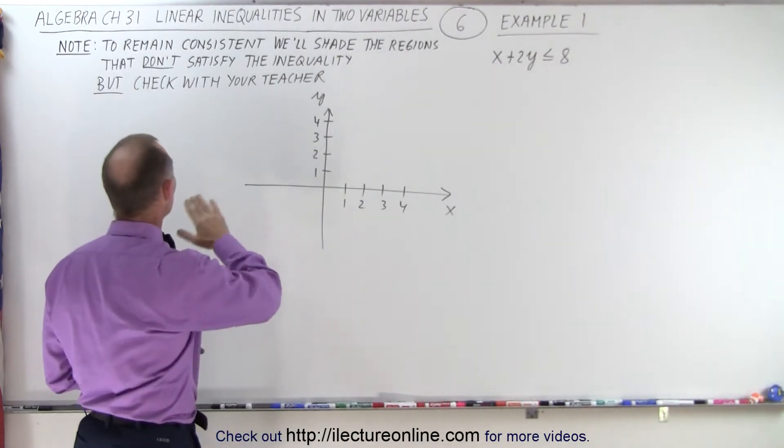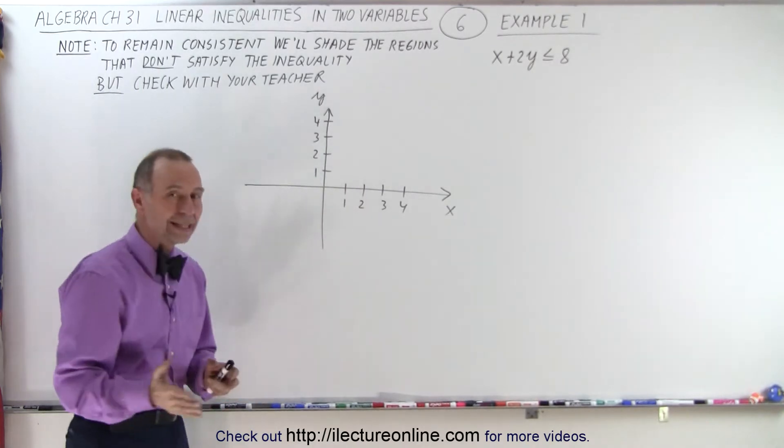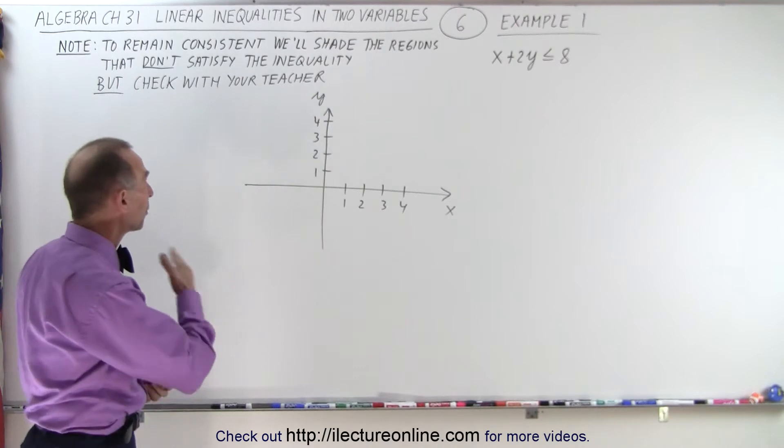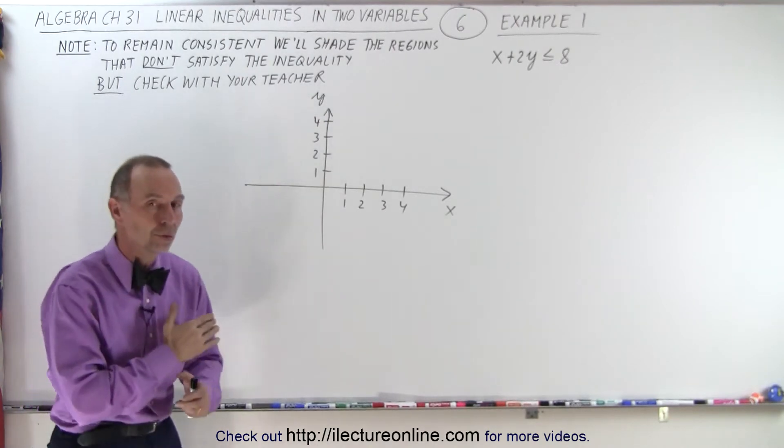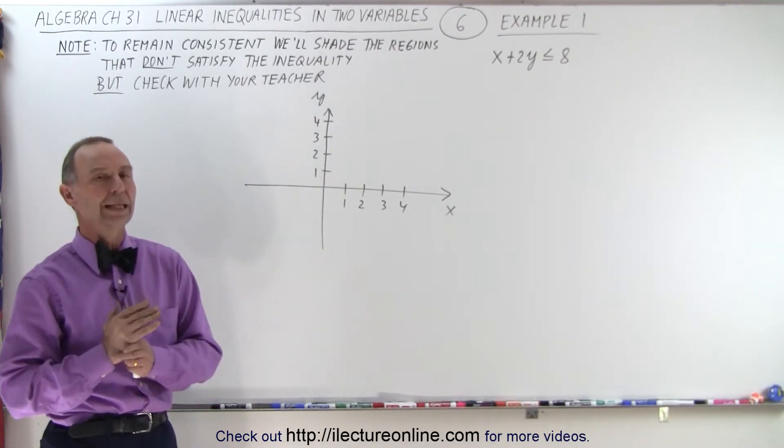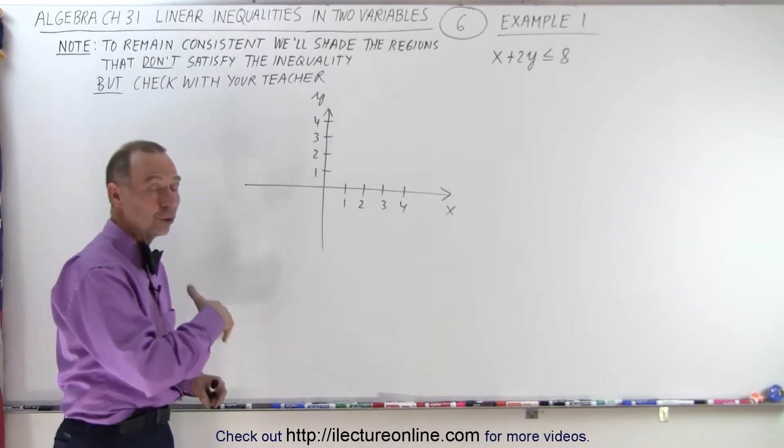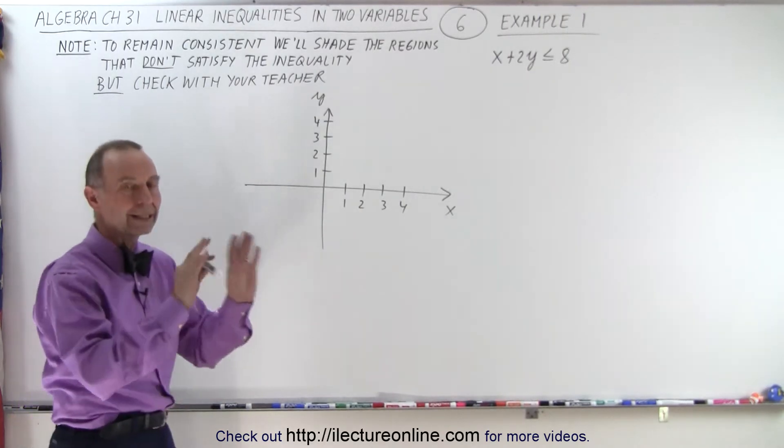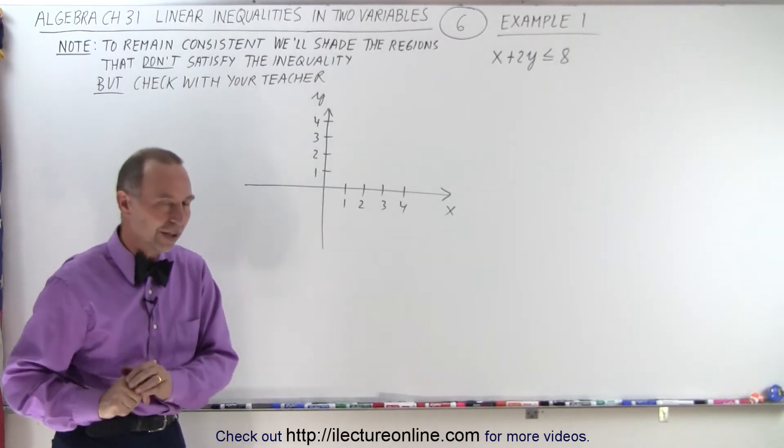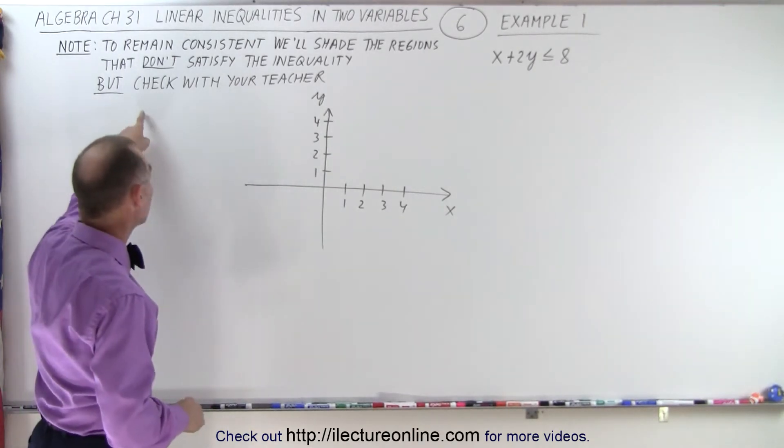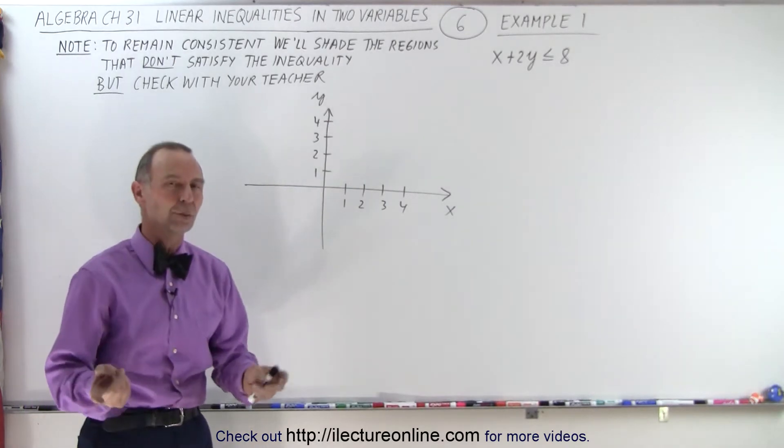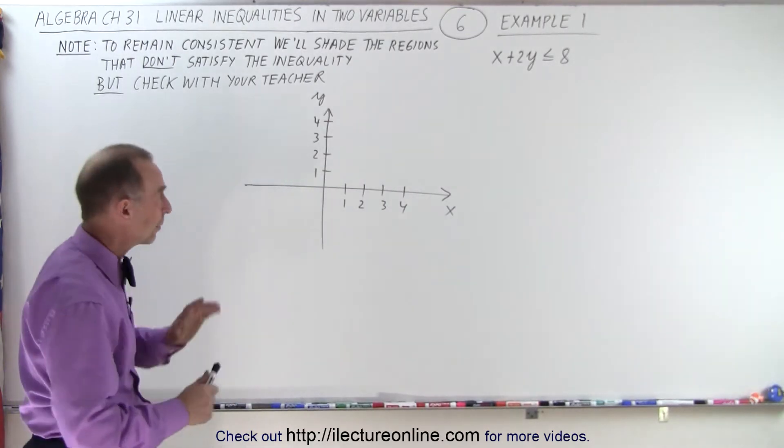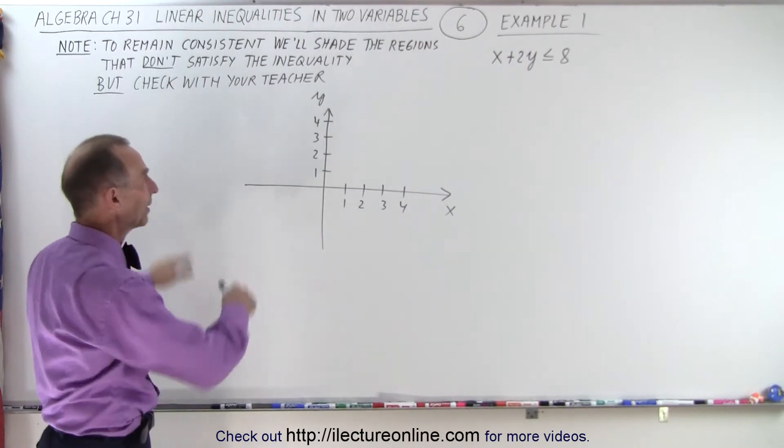Notice that we're going to stay consistent with the single inequality and multiple inequality problems where we're simply going to shade out the regions that do not satisfy the inequality, just so that it's easier to do the multiple inequality problems. We'll make it clear which side satisfies and which side doesn't satisfy the inequality. Now, check with your teacher because they may want to do it the other way around. I simply don't agree with that method, so we're going to stay consistent with the method that I prefer.